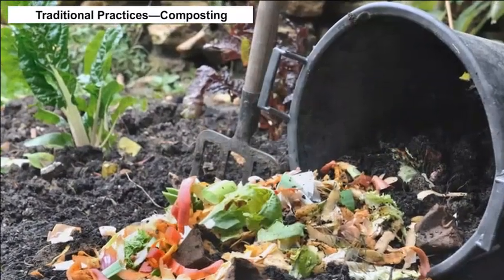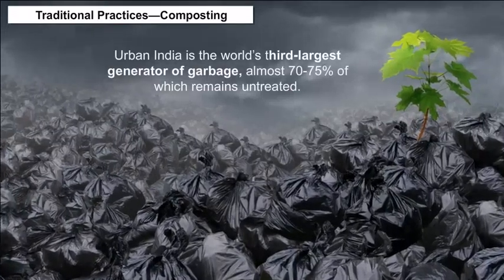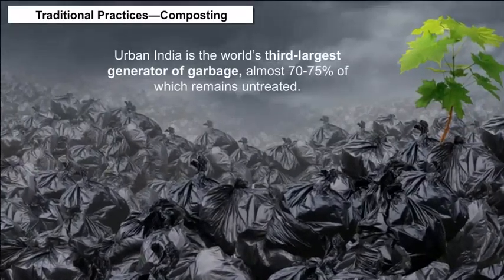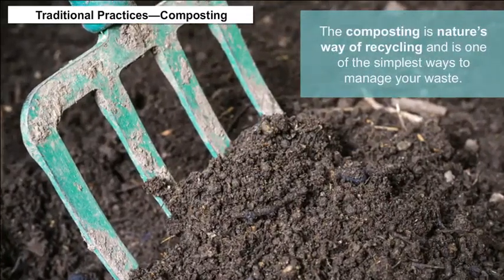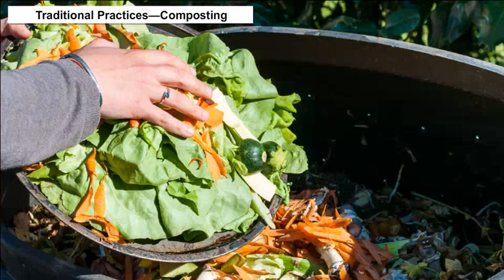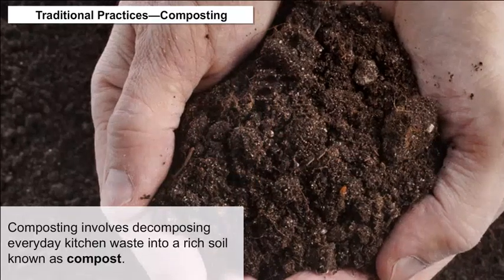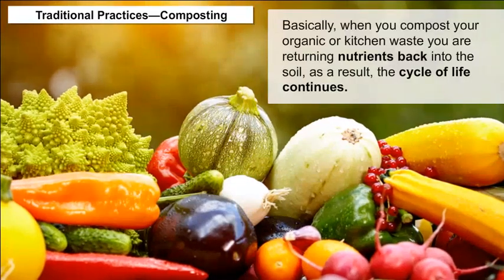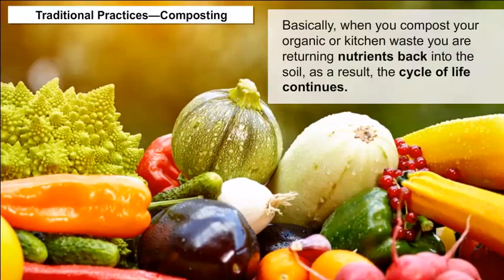Traditional Practices — Composting: Urban India is the world's third largest generator of garbage, almost 70–75% of which remains untreated. Composting is nature's way of recycling and one of the simplest ways to manage waste — it can even be done at home. Composting involves decomposing everyday kitchen waste into a rich soil known as compost. When you compost your organic or kitchen waste, you are returning nutrients back into the soil, and as a result, the cycle of life continues.